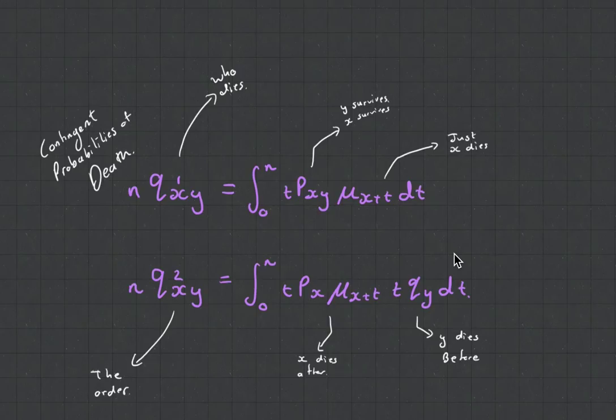We're going to be talking about contingent probabilities of death. Now there's two main types of these probabilities, and I've got them both over here.